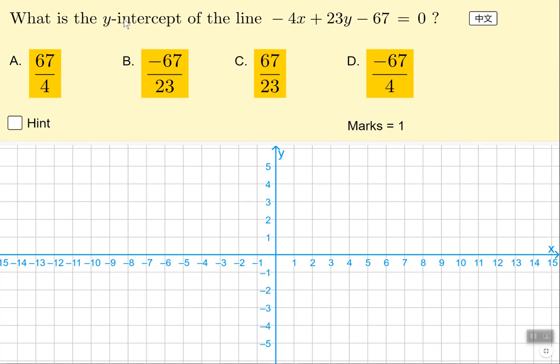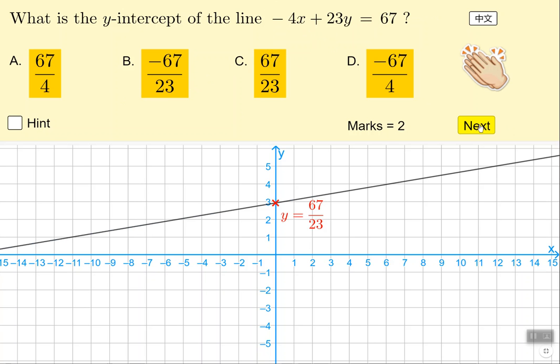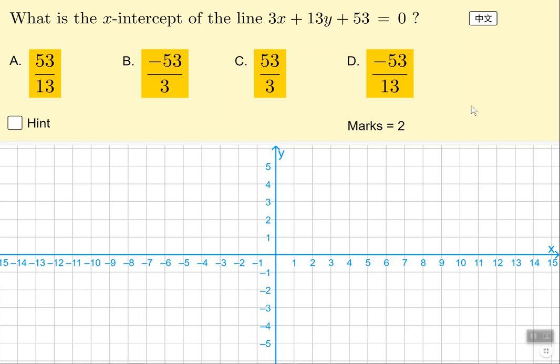Now watch out, we're looking for the y-intercept this time. So we can read that this would become 67 when you brought it across, over 23. My suggestion is you'd get up to 10 correct to build your confidence.